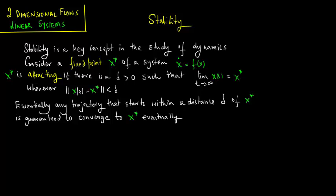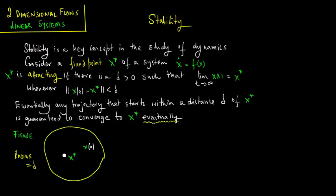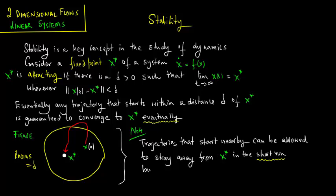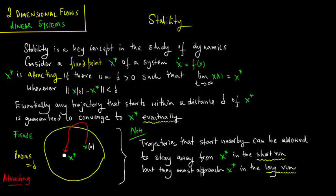Let us plot a simple figure. We denote x star, you have x of 0, a radius of size delta, and that is what the trajectory looks like. Note that trajectories that start nearby can be allowed to stray away from x star in the short run.